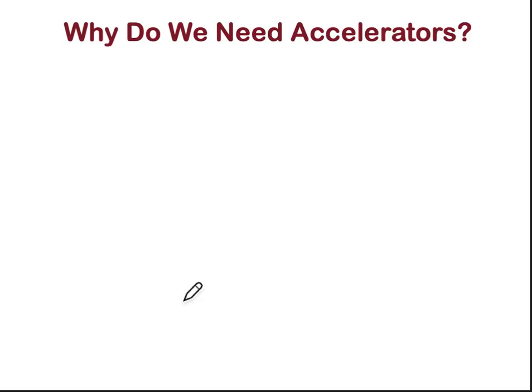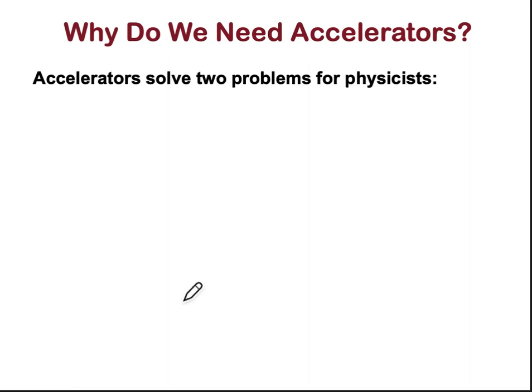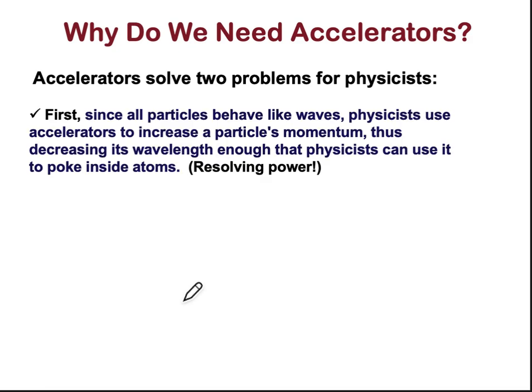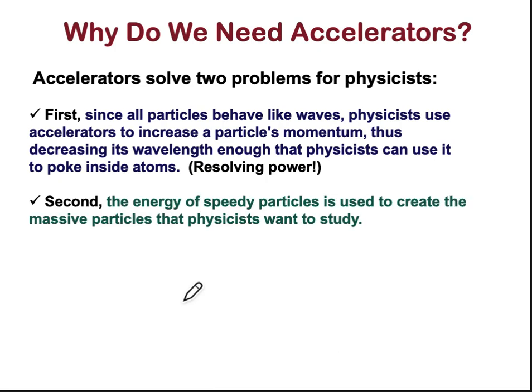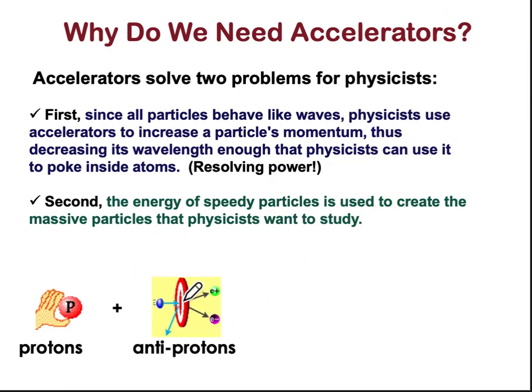Why do we need accelerators? Accelerators solve two problems for physicists. The first is that particles behave like waves — physicists use the accelerator to increase the particle momentum, thus decreasing its wavelength enough that they can probe inside the atom. The second is that by developing high-speed, high-energy particles, these can create massive particles that physicists actually want to study.